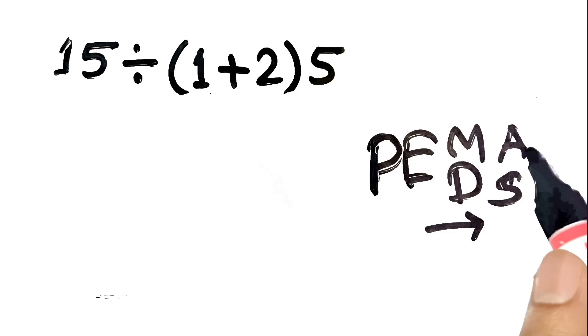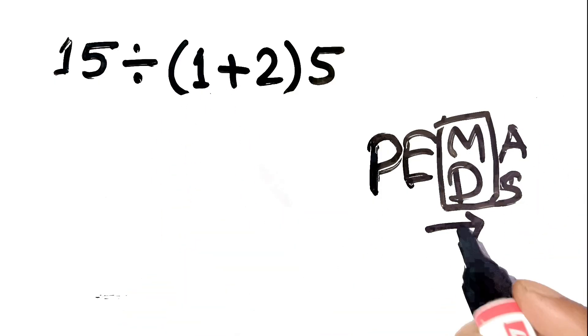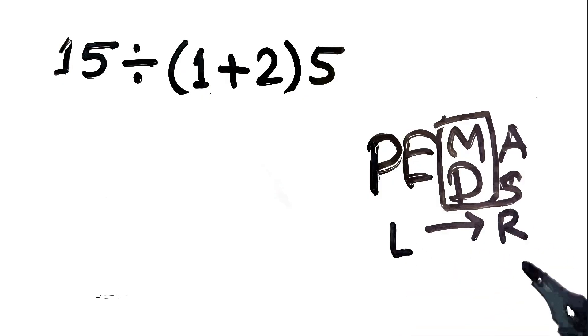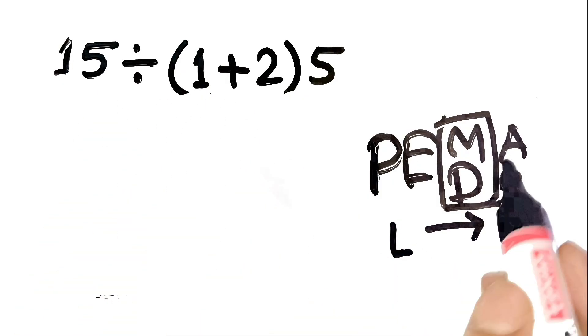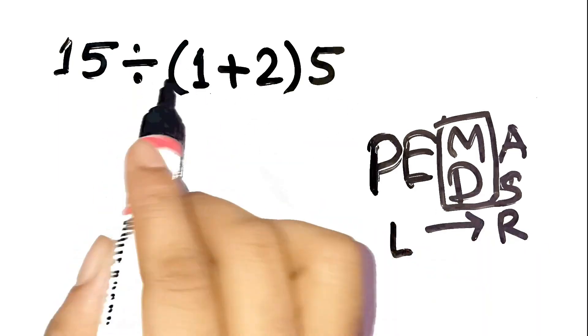The key point here is that multiplication and division have equal priority, so we move strictly left to right. Don't just multiply everything after parentheses first. The division comes first as it appears.